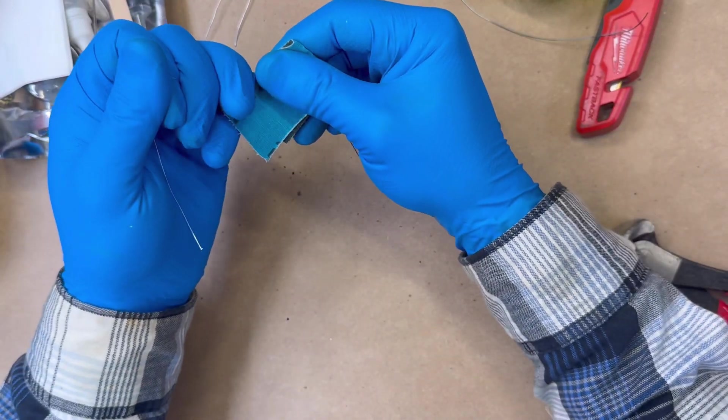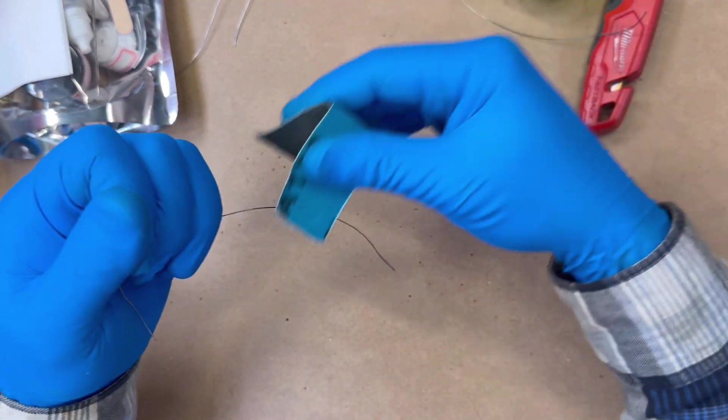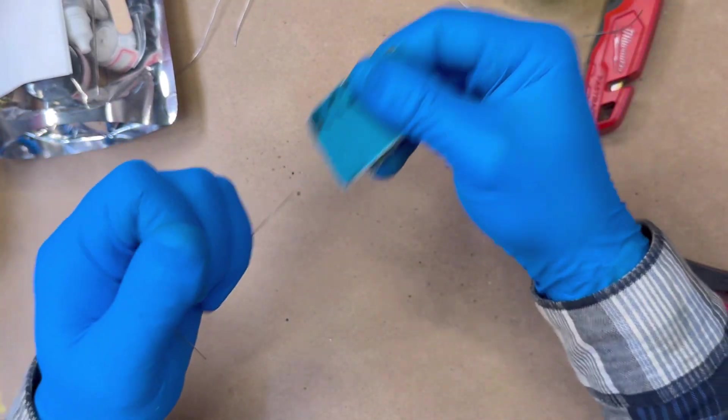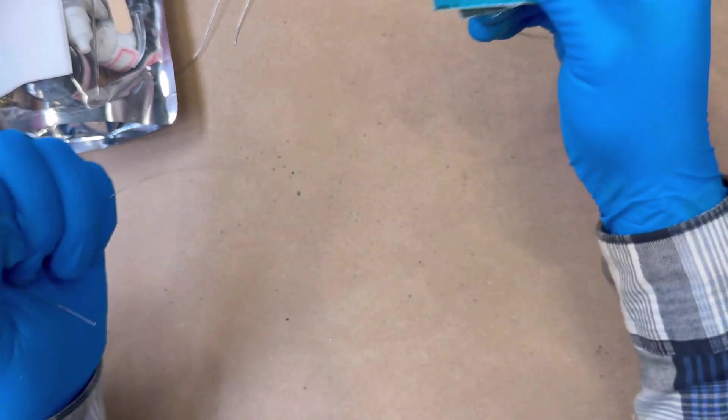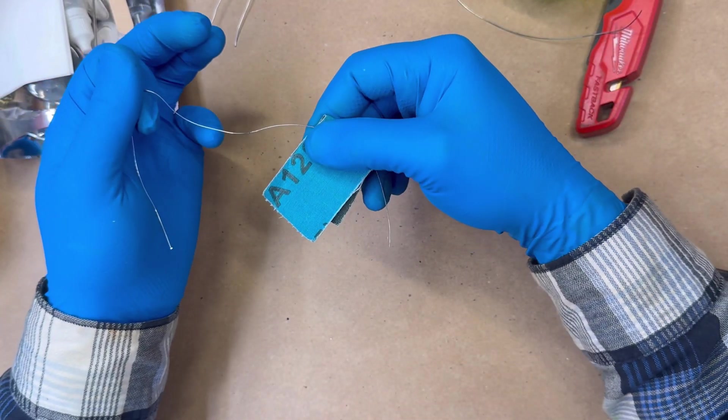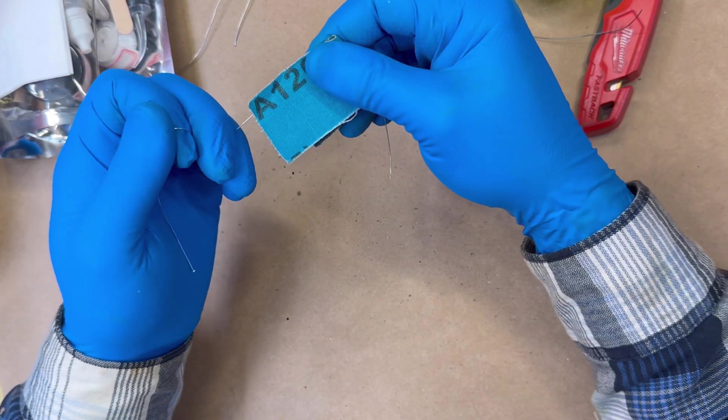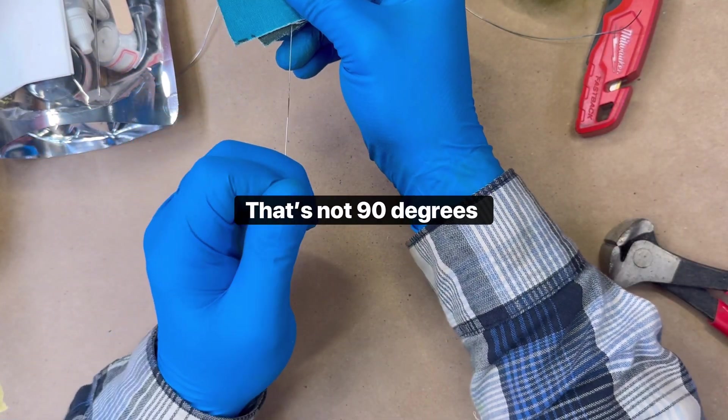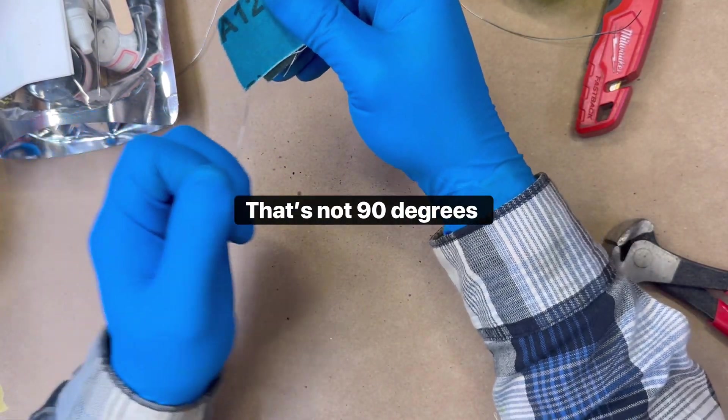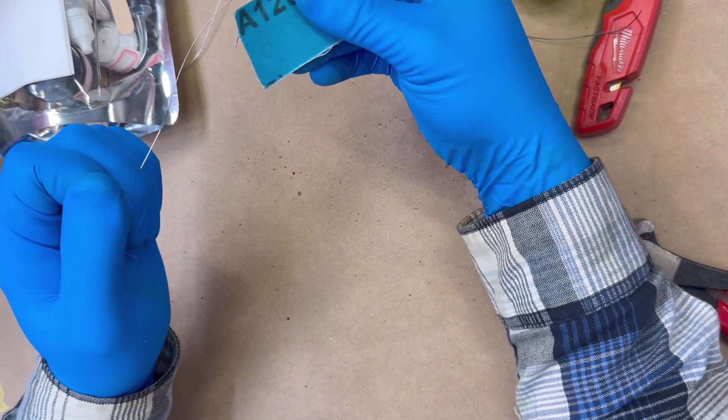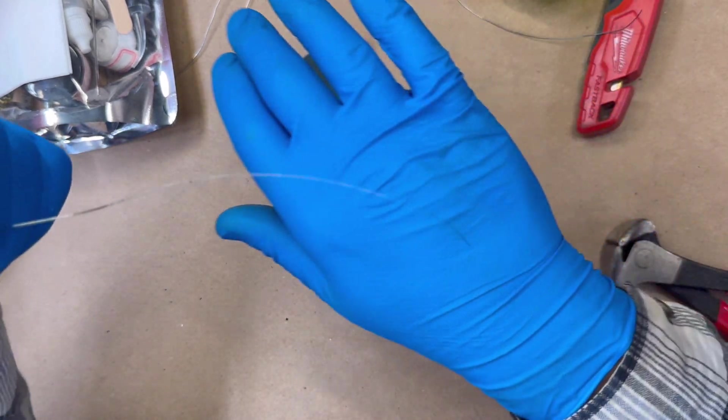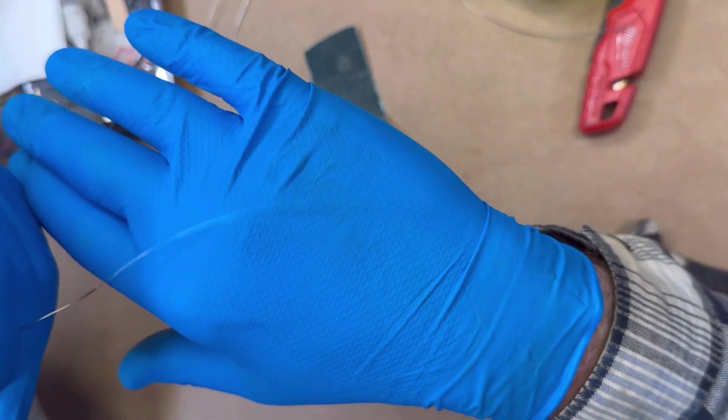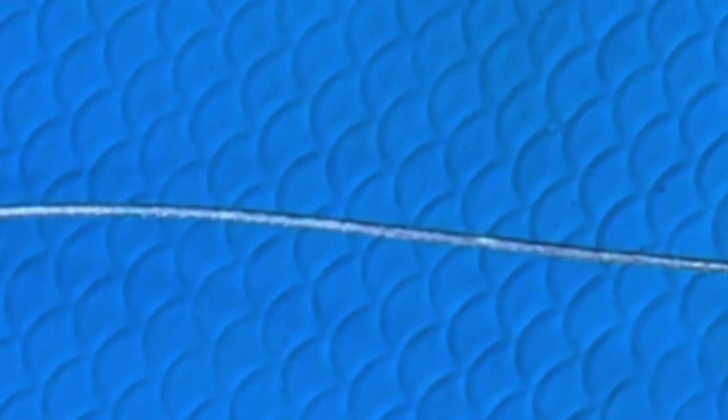The next thing I do is I abrade it with some 120 grit sandpaper. I like to hold the wire like this and then put it at 90 degrees just so that the striations that I'm causing, the abrasions, the lines of them, not like you'll ever be able to see this, but they run perpendicular to the direction of pull.